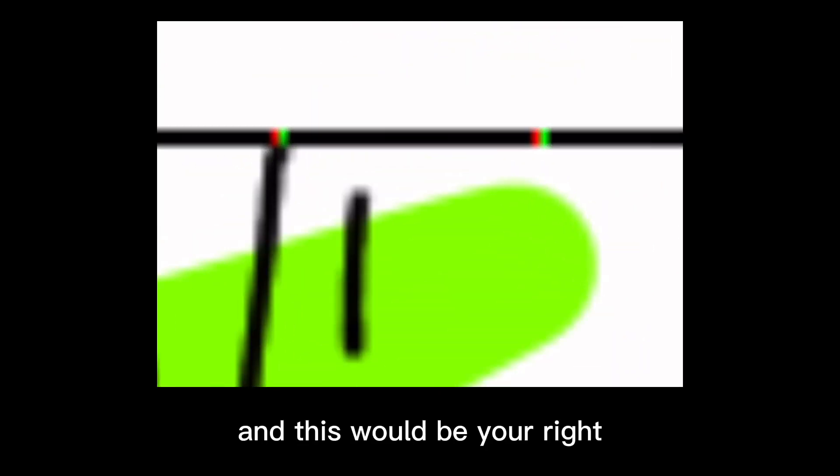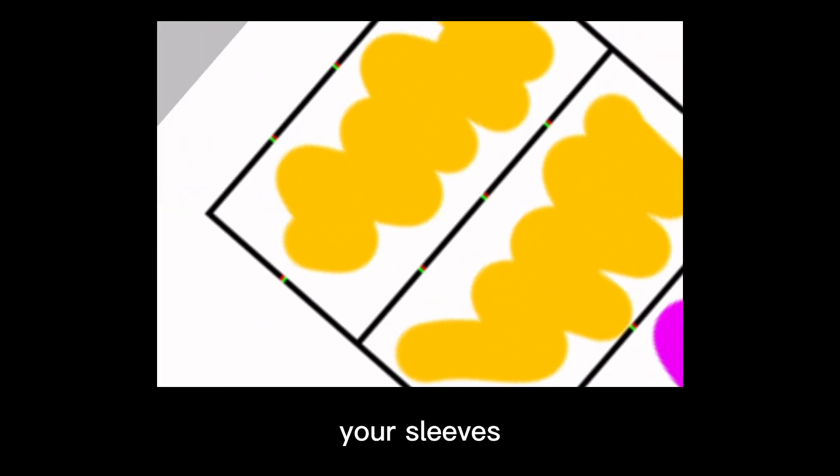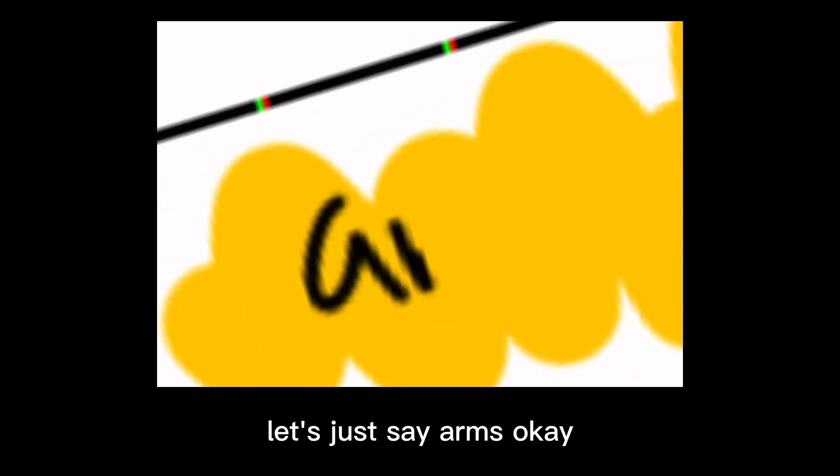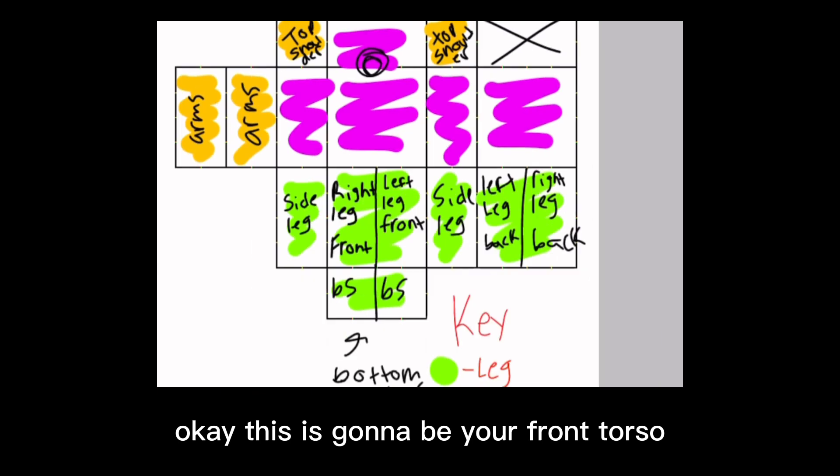This little part here is going to be the back of your leg, so it's going to be your left leg back, and this would be your right leg back. Now let's do the arms. Obviously it's going to be your arms, your sleeves. So arms, and then it's going to be the top like your shoulder. It's also going to be the top shoulder.